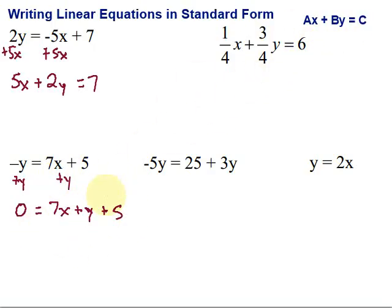Now, I need to get rid of that 5, so I'm going to subtract that from both sides. Then, 0 minus 5 is going to be negative 5, and I'm going to flip it around. So, I'm going to take this X and Y stuff and write that first. So, we have 7X plus Y equals negative 5. So, there it is in standard form.